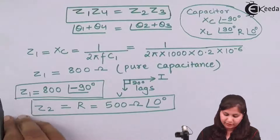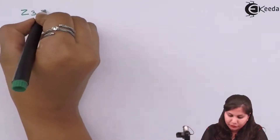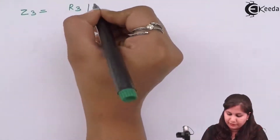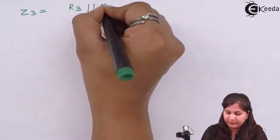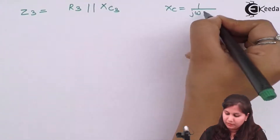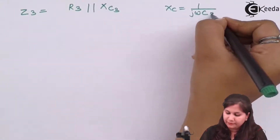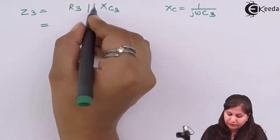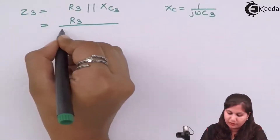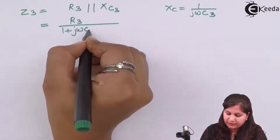Next is Z3, which is a parallel combination of a resistance and a capacitor. Z3 equals R3 in parallel with XC3. Since XC3 = 1/(jωC3), solving this parallel combination gives Z3 = R3 / (1 + jωC3R3).